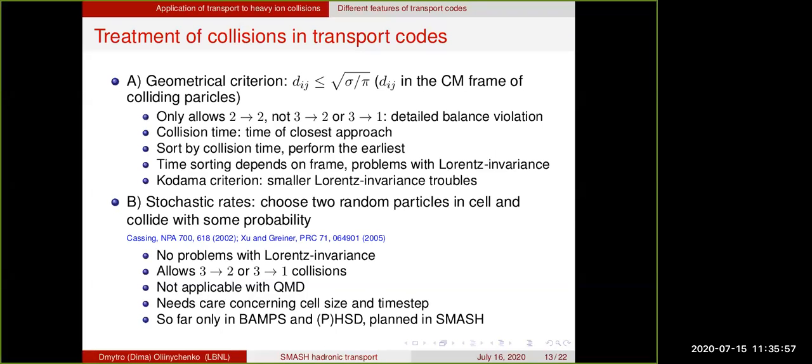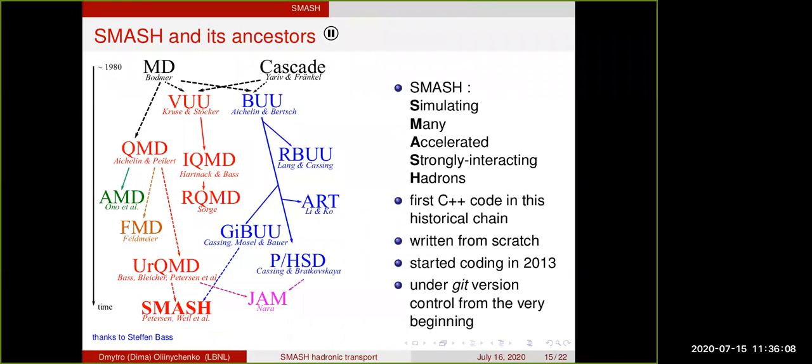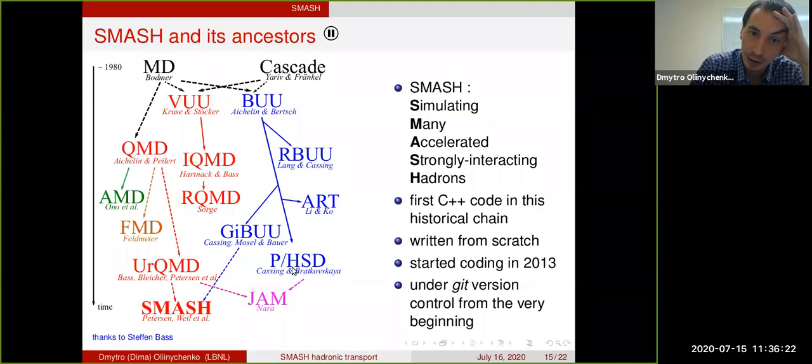One question on the next slide: you also mentioned that SMASH was not superior, I guess maybe you're being humble, but I thought one of the main reasons to develop that was to have a relativistically invariant code that was properly boost invariant. I thought that the old codes did not do this. I would say, well, in HSD at least you have an option. I don't know, HSD is not an open source code, but at least in HSD you have an option to have stochastic rates, so in this respect SMASH is not superior.